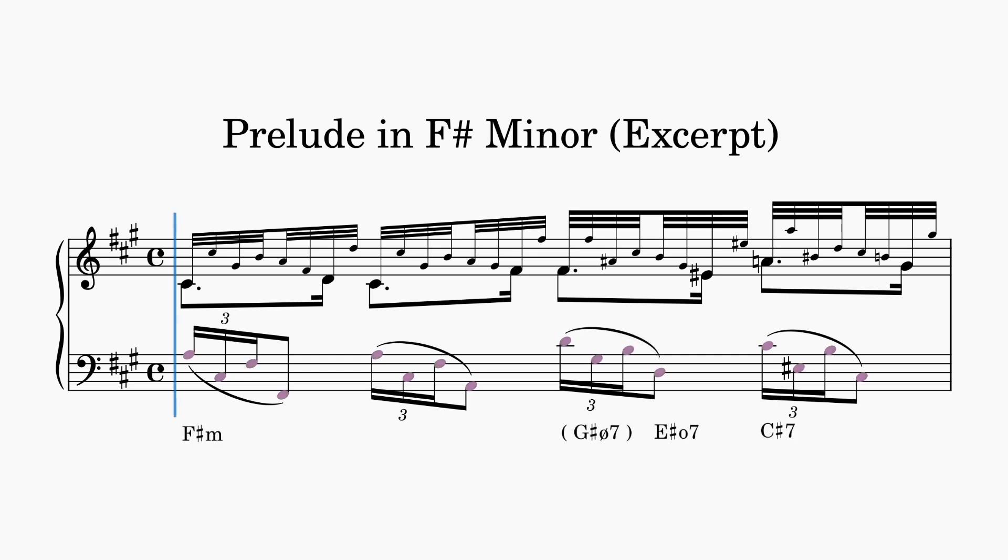The left hand spells out a fairly straightforward harmonic progression, a tonic F-sharp minor chord moving to a dominant C-sharp 7 chord. But in the right hand, only about half the notes come from these chords.